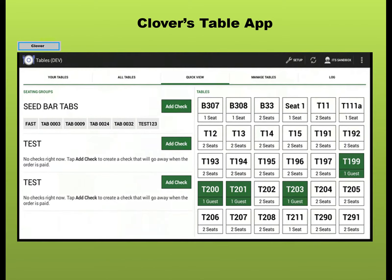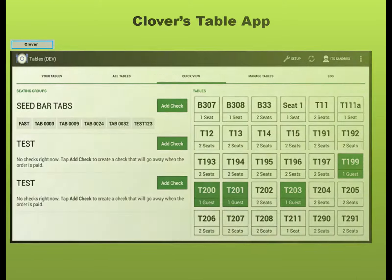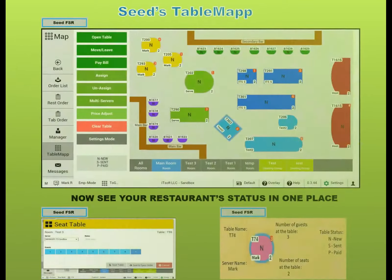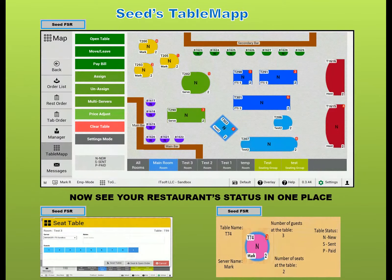Clover's Table App does not allow you to see your restaurant the way you see it, but TableMap will. View your restaurant in living color using Seed's TableMap. Customize your own floor plan.